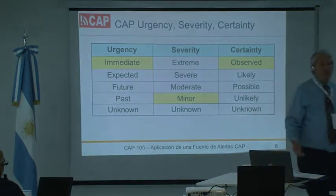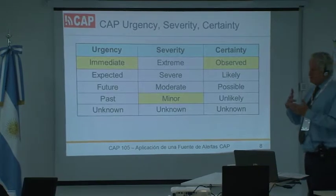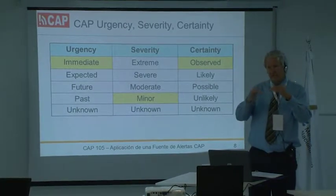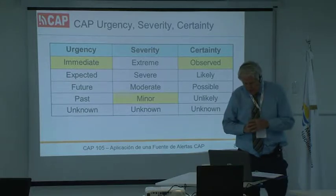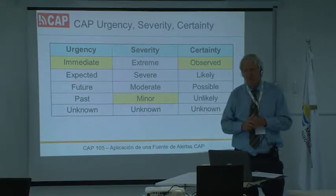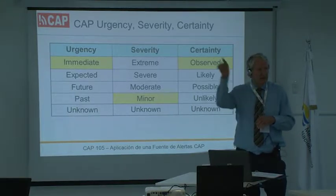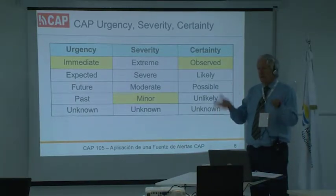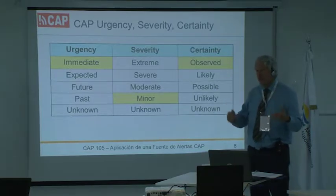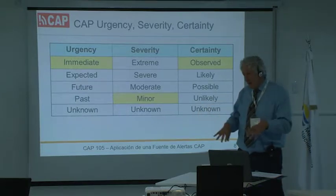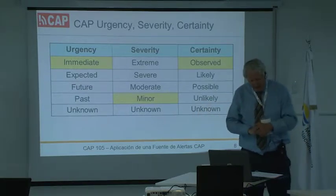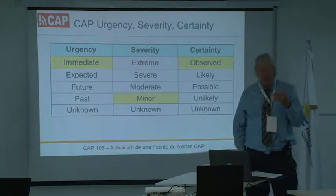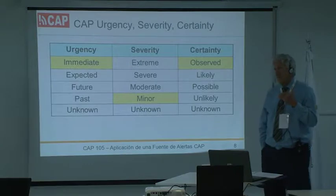Certainty in CAP has four levels — not a numeric number, but greater than or less than 50 percent. The top level is 'observed,' meaning we're just about positive this is real — a p95, or p less than 0.05. 'Likely' is greater than 50 percent, 'possible' is less than 50 percent, and 'unlikely' is really not at all likely. In this case of the power outage, we're selecting 'observed' because we know it has happened already.